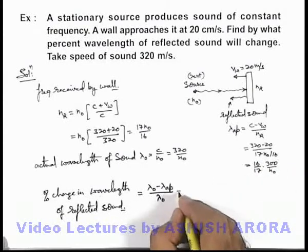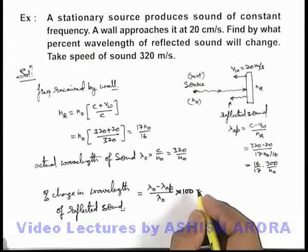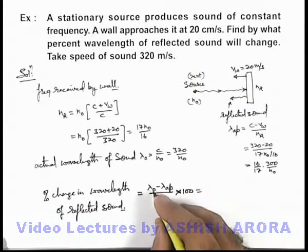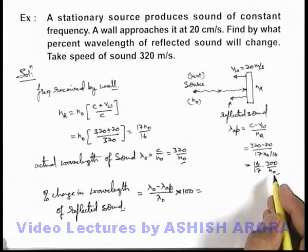If we substitute the values here, and for percentage change it'll be multiplied by 100 also. And on substituting the values, this λ₀ can be substituted from here and λ apparent can be substituted from here.